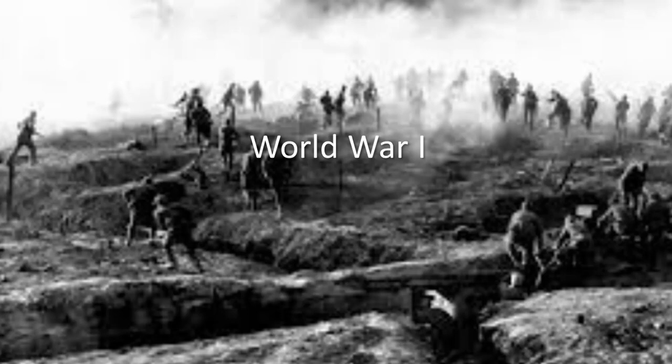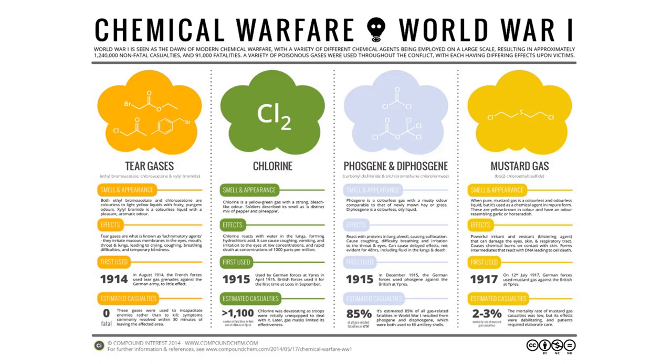During World War One, the German and French armies used two different types of crowd controlling agents. One used chlorine gas, which is yellowish or greenish in color, and the other group used mustard gas. Other types used include phosgene, and later CS and CN type gases have been used since that time.